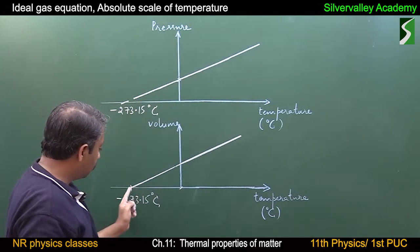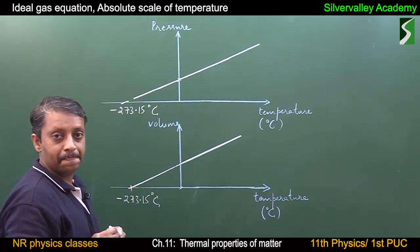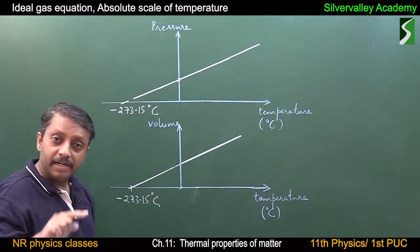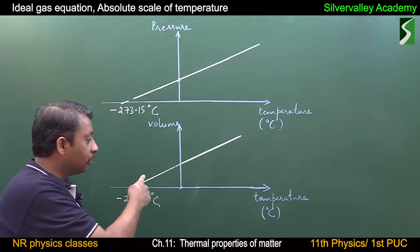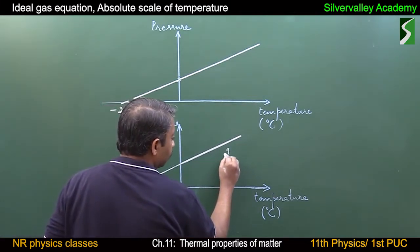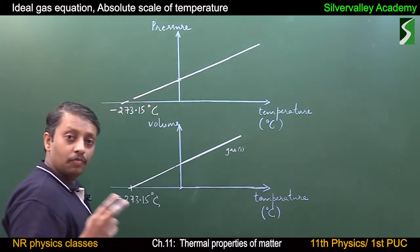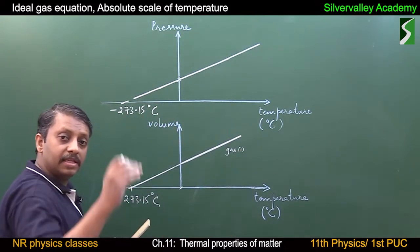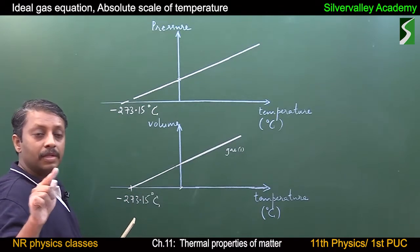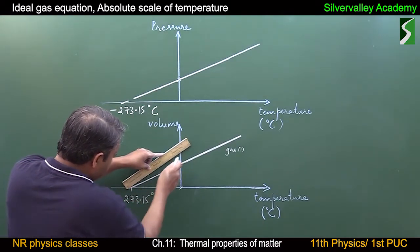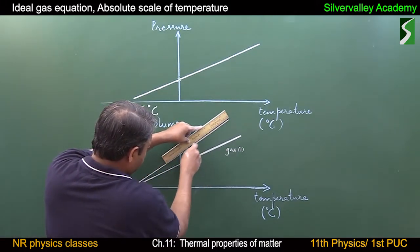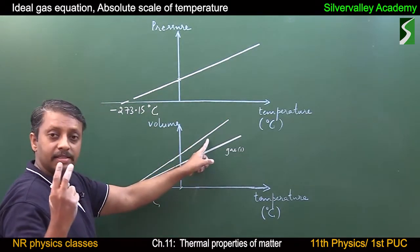At this temperature, pressure is zero; at this temperature, volume is zero. Now consider a different gas — that different gas will also show the same characteristic. For the second gas, volume increases with increase in temperature and decreases with decrease in temperature, but volume also becomes zero at this same temperature of −273.15 degrees Celsius.